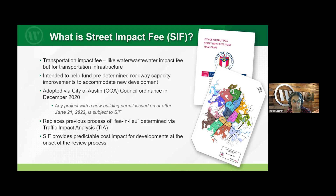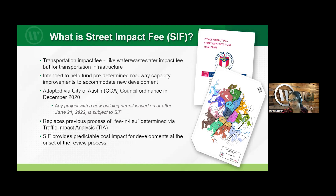Street impact fee, or roadway impact fee, is another type of impact fee — similar to water or wastewater impact fees — but specifically for transportation infrastructure. It's intended to fund roadway capacity improvements or capital improvements geared toward accommodating new development. In Austin specifically, an ordinance approved in December 2020 established that all new building permits issued after June 21st, 2022 would be subject to SIF. There used to be a fee-in-lieu option with all TIAs done in the city, but those went away with the street impact fee.